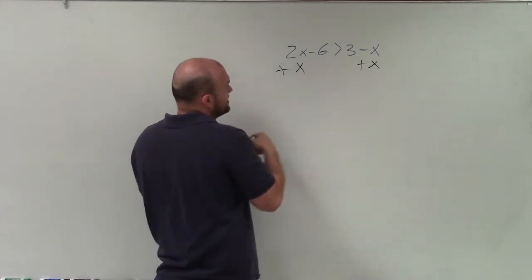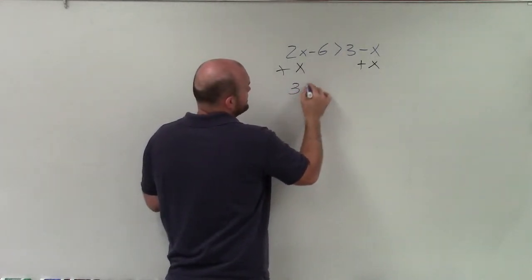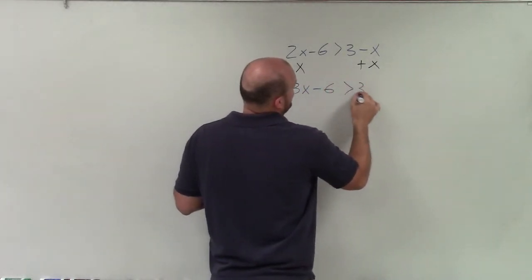And by doing that, I now have 2x plus x, which is 3x minus 6, is greater than 3.